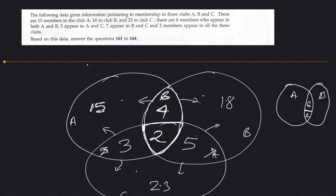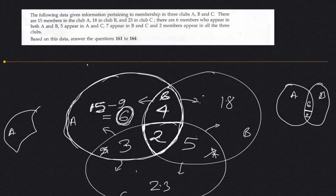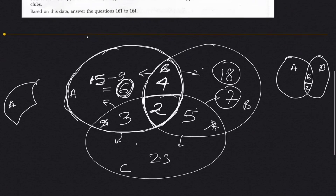Now we use the total counts of 15, 18, and 23 for each full circle. To find only-A, we subtract the overlapping parts from 15: 15 minus four minus three minus two equals six. For only-B: 18 minus four minus two minus five equals seven. For only-C: 23 minus three minus two minus five equals 13.